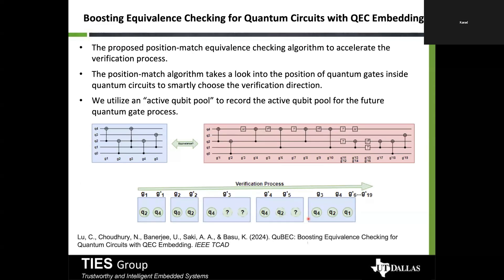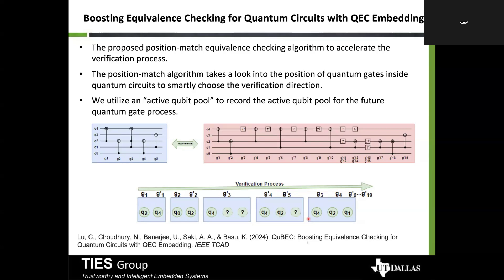In our paper, we proposed a position-mass-based strategy. We maintain an active qubit pool and depending on that pool we determine which gate to handle next. Rather than looking only at the immediate next step, we look much further into the future before making a decision. Our method does incur more memory overhead for larger quantum circuits, but verification is done statically and memory is not a major concern as of now.